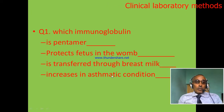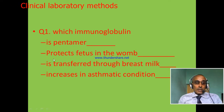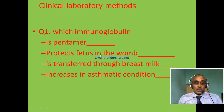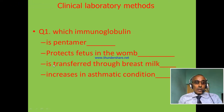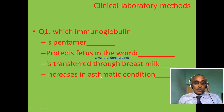Summary questions: Which immunoglobulin is a pentamer? Which protects the fetus in the uterus? Which is transferred through breast milk? Which increases in asthmatic conditions?